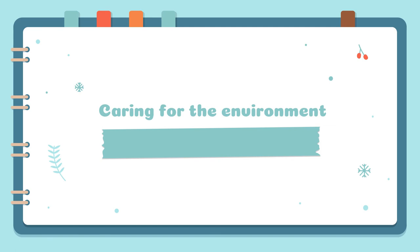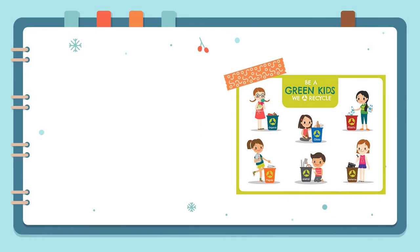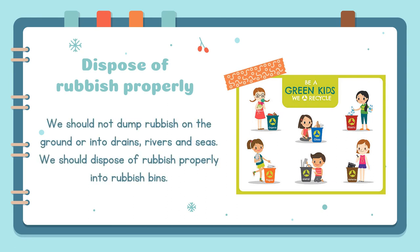Caring for the environment. How can we care for the environment? Dispose of rubbish properly. We should not dump rubbish on the ground or into drains, rivers, and seas. We should dispose of rubbish properly into rubbish bins.